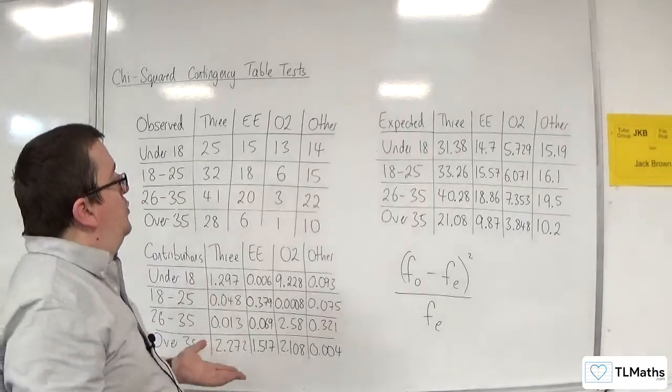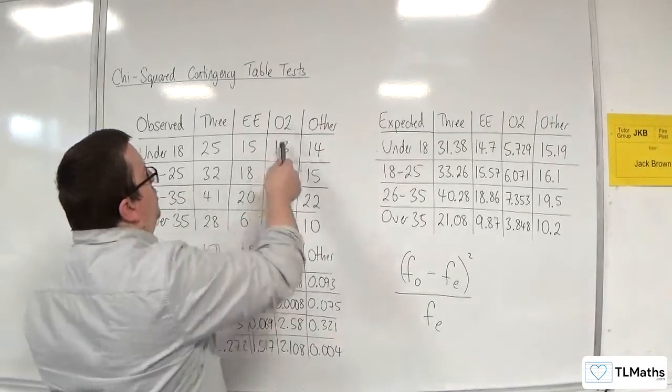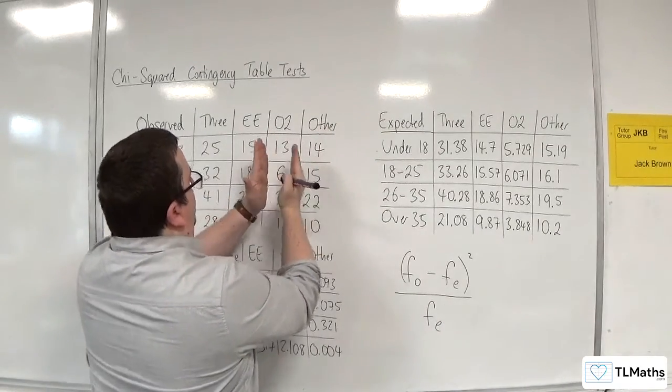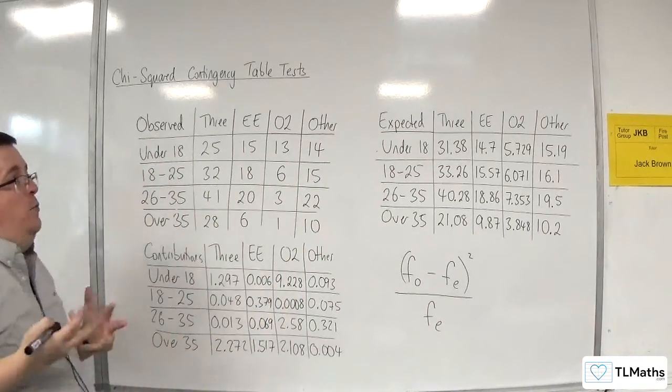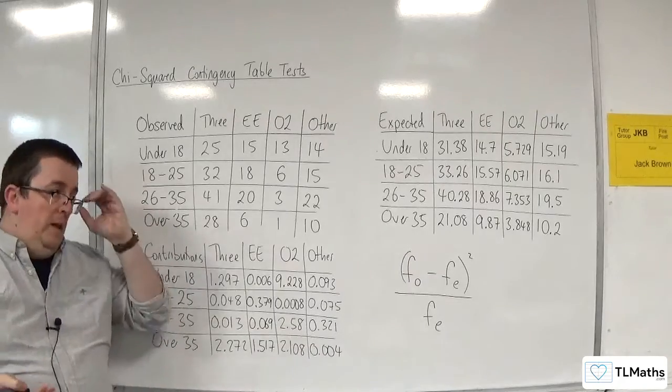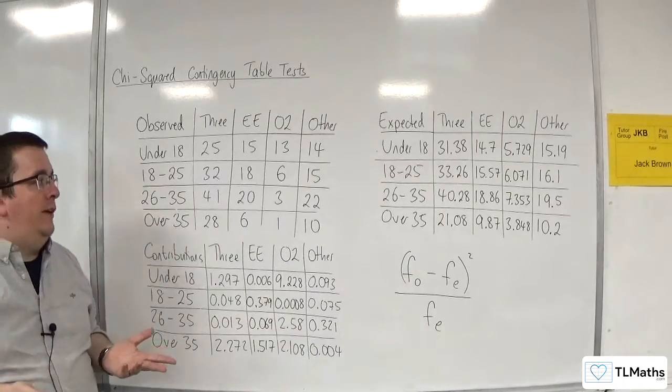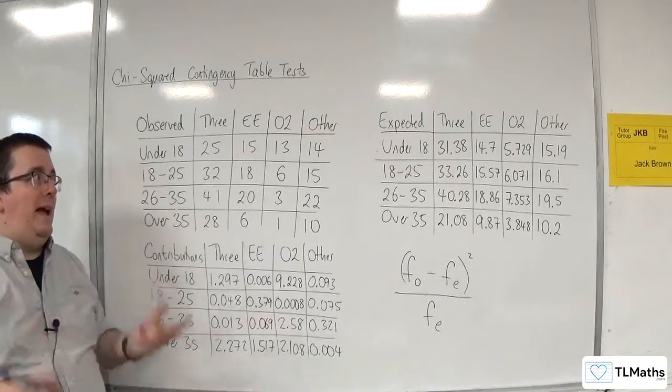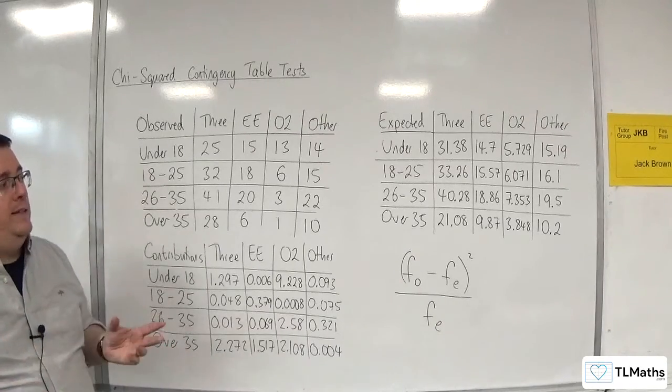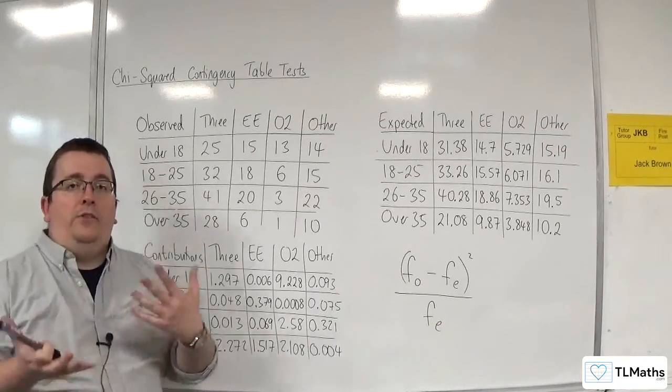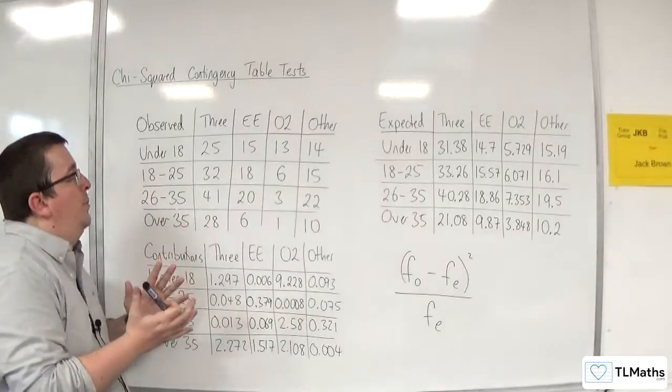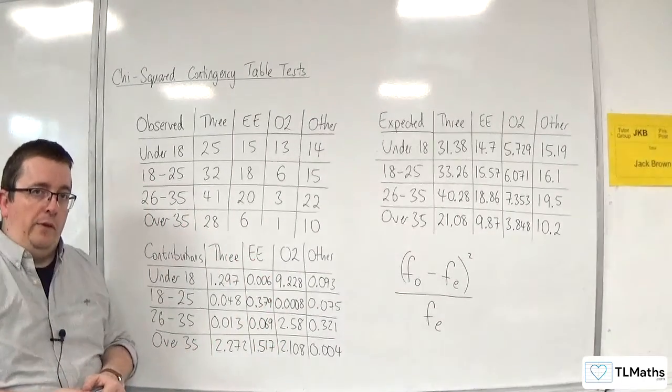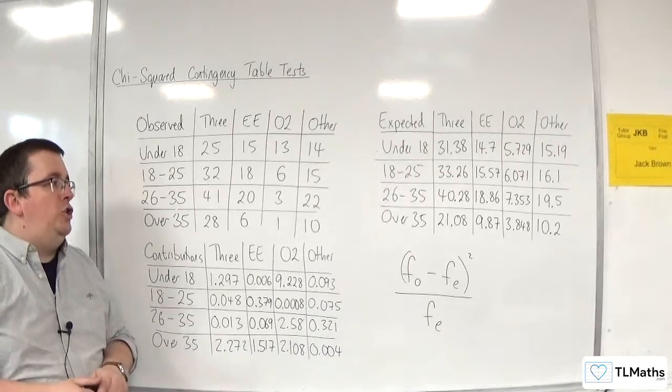You do have an alternative. You could group together the O2 column with the other column. So you could bring those two together, and that would seem more reasonable. Maybe we thought we would get more customers who were on the O2 contract, so we were collecting that data, but it turned out that we didn't get so many. So actually, we'll bring it into the other group, and then that will get rid of the small expected frequency for us.